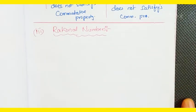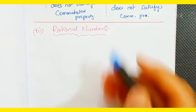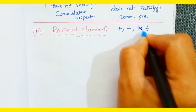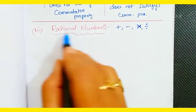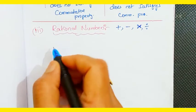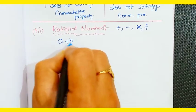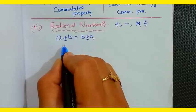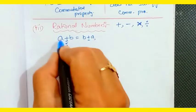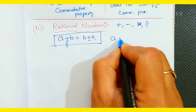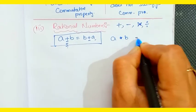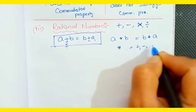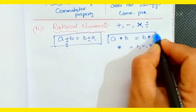Now for rational numbers, we check the commutative property under all four operations. The general form is: a ★ b = b ★ a, where ★ represents plus, minus, multiplication, or division. Let us go with examples.